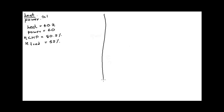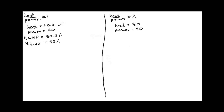Now let's see what is going to happen if the heat-to-power ratio is increased up to 2. Here, the heat requirement is about 80, while the power requirement is maintained at 40. For simplicity, if we are going to use the same CHP plant or the same diesel engine, it will give us 40 heat units and 40 power units.